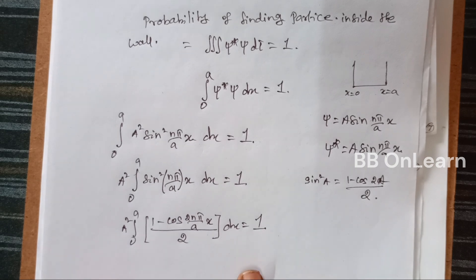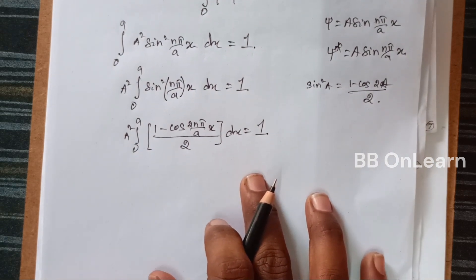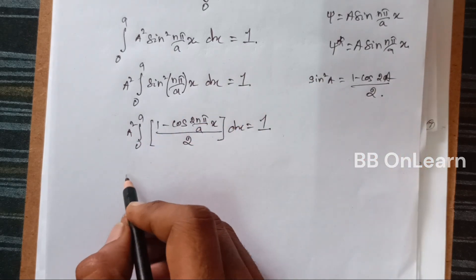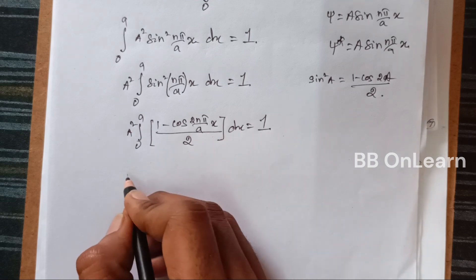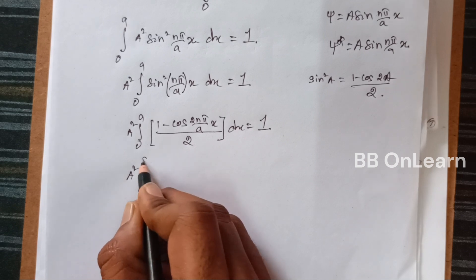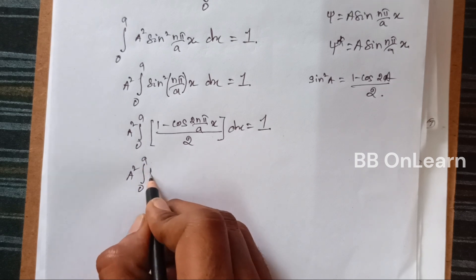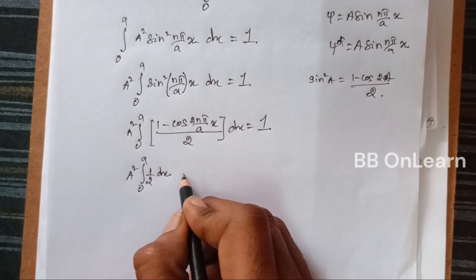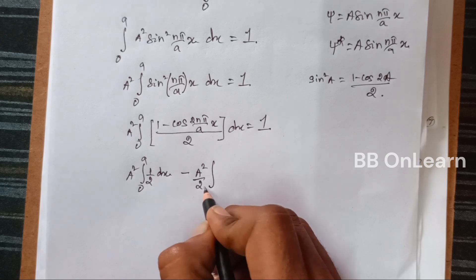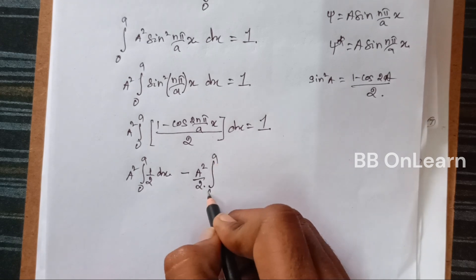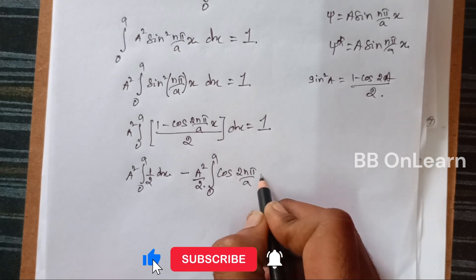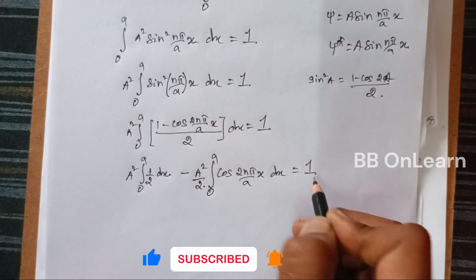dx equals 1. Splitting the equation into two parts: A squared times the integral from 0 to a of (1/2) dx, minus A squared times the integral from 0 to a of cos(2nπ/a · x) dx equals 1.